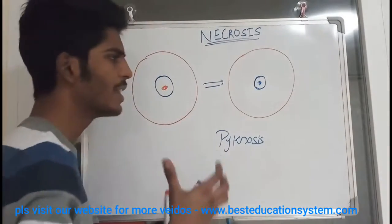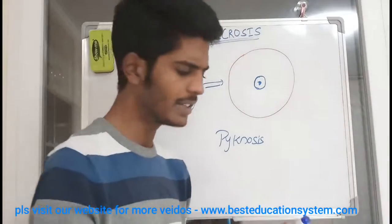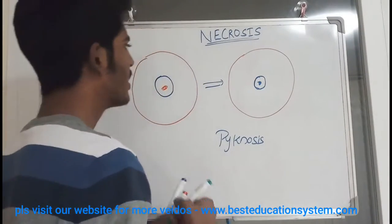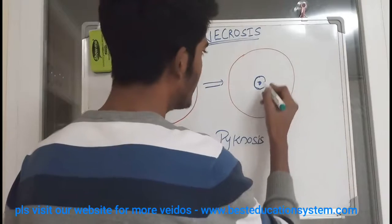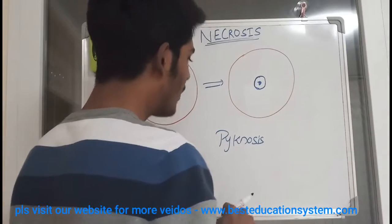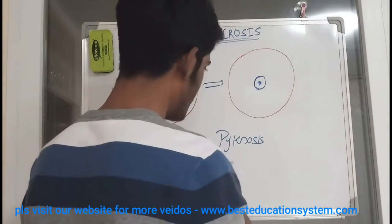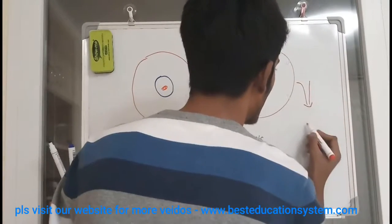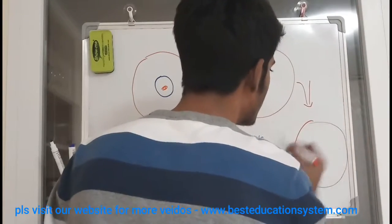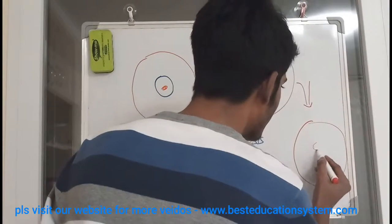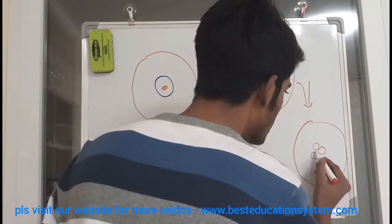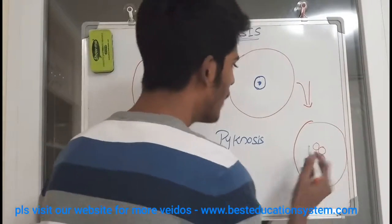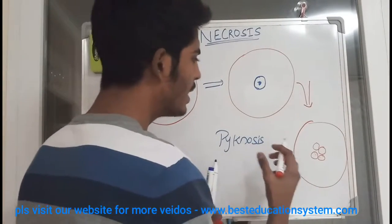After pyknosis there is a process called karyorrhexis. During karyorrhexis, the shrunken nucleus undergoes fragmentation, but it remains in the center of the cell. So in karyorrhexis, the cell shows fragments of the nucleus — the nuclear material is within the cell but it is not completely intact.